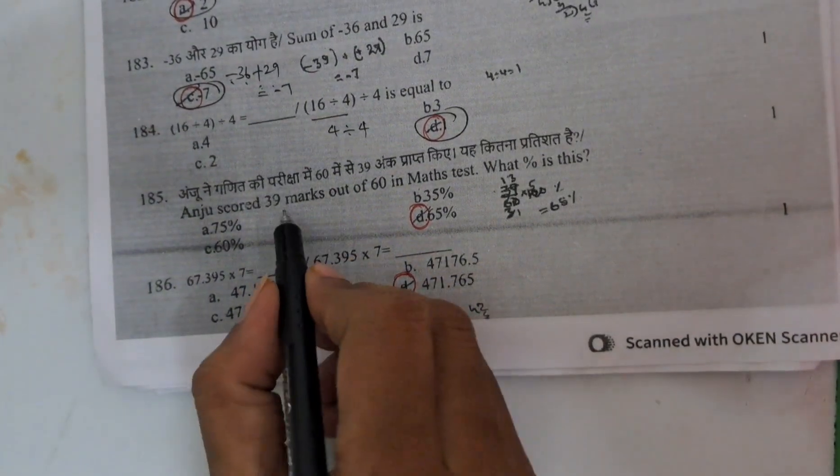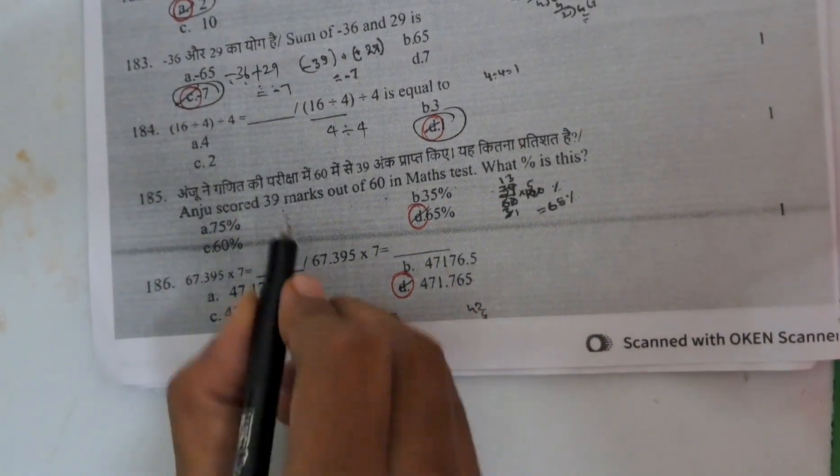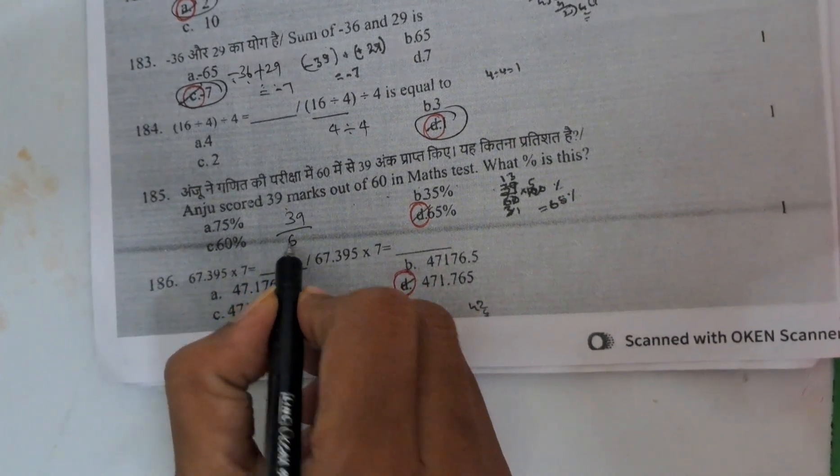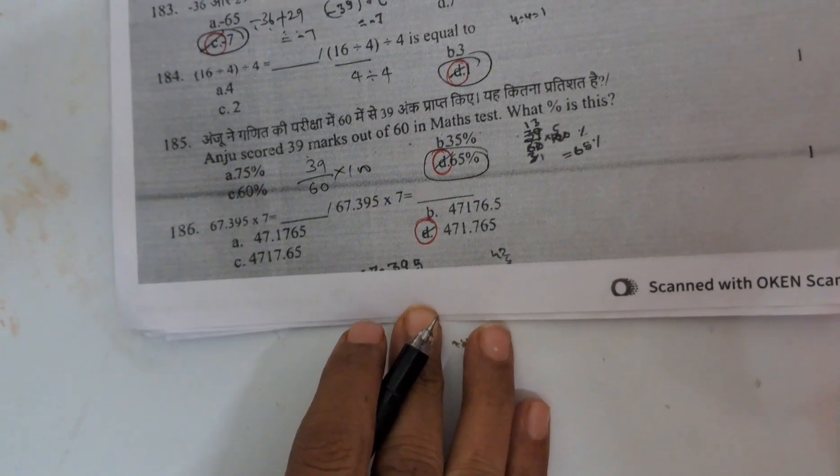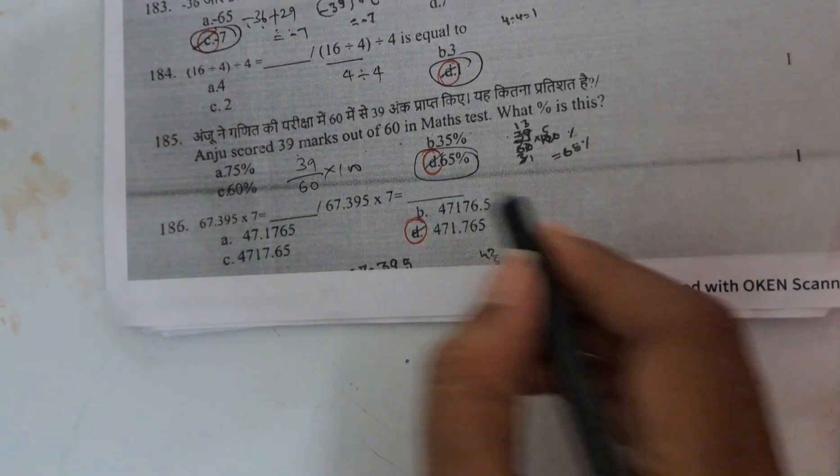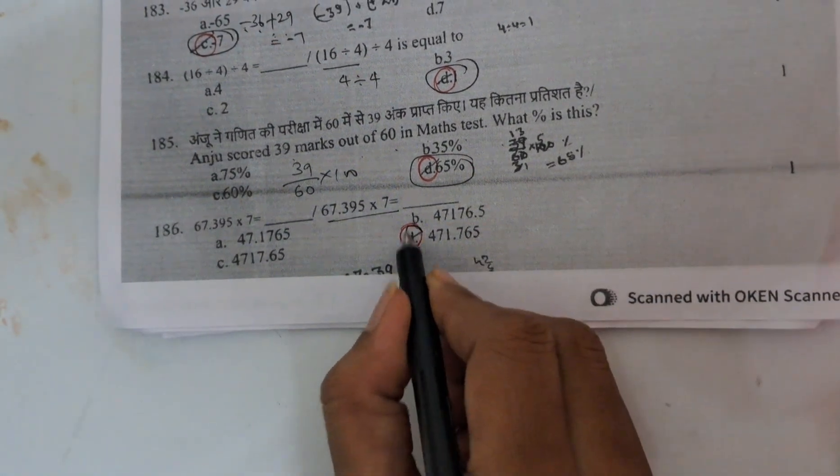Anju scored 39 marks out of 60 in maths test. What percentage? Here asking 39 by 60 into 100. If you do, you will get 65%. And here 186, if you do the multiplication, you will get the answer D.